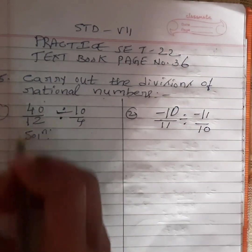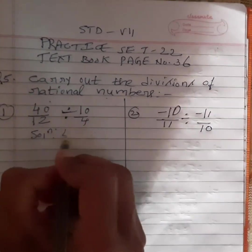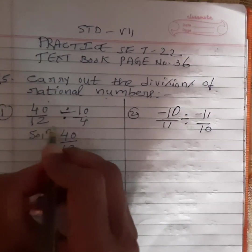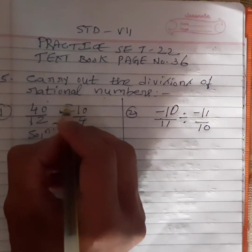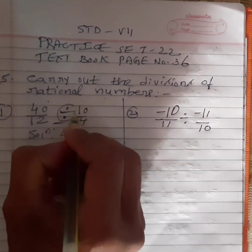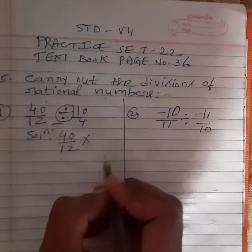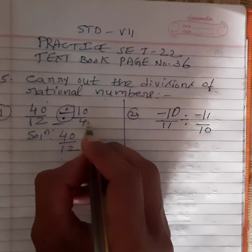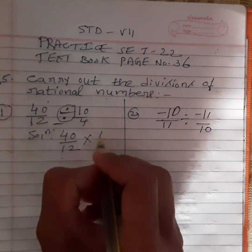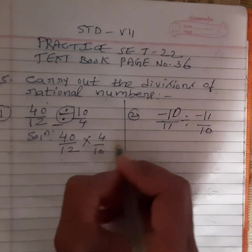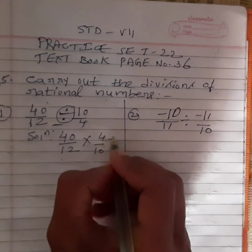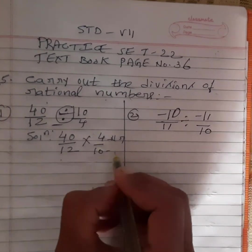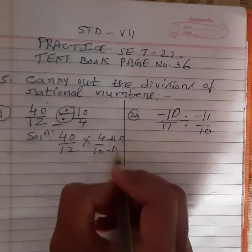First we will write the solution. 40 by 12 we will take as it is. When we are simplifying this sum, the division symbol will become multiplication. Then 10 by 4 will become the reciprocal, that is 4 by 10. We know 4 is the numerator and 10 is the denominator.